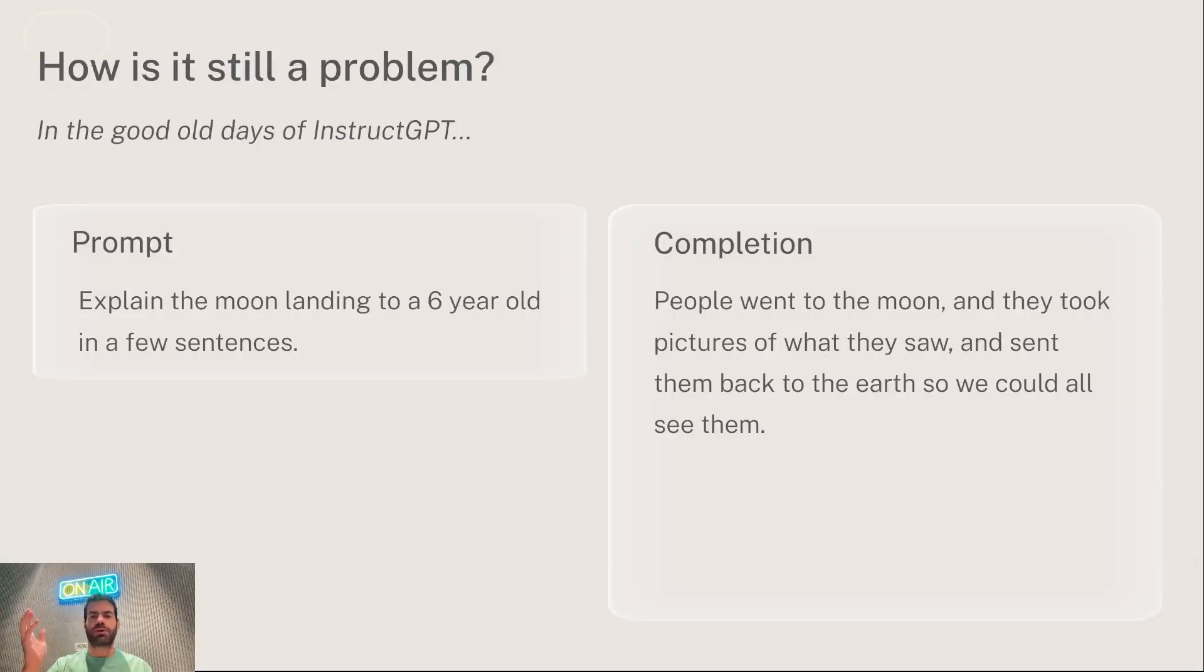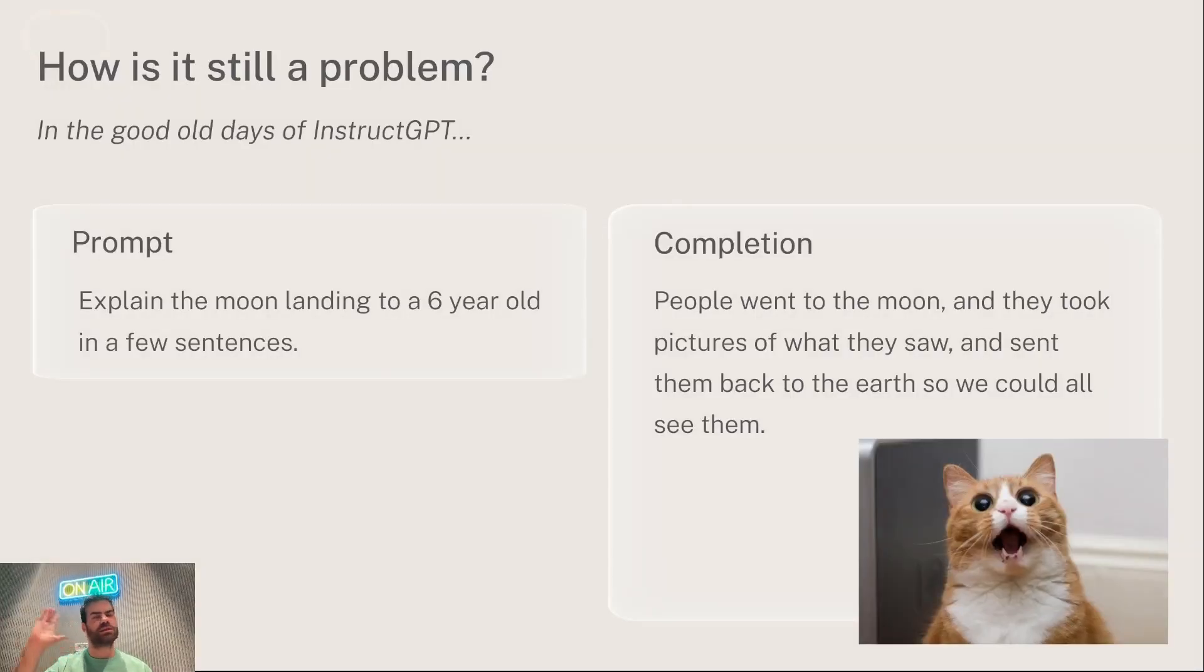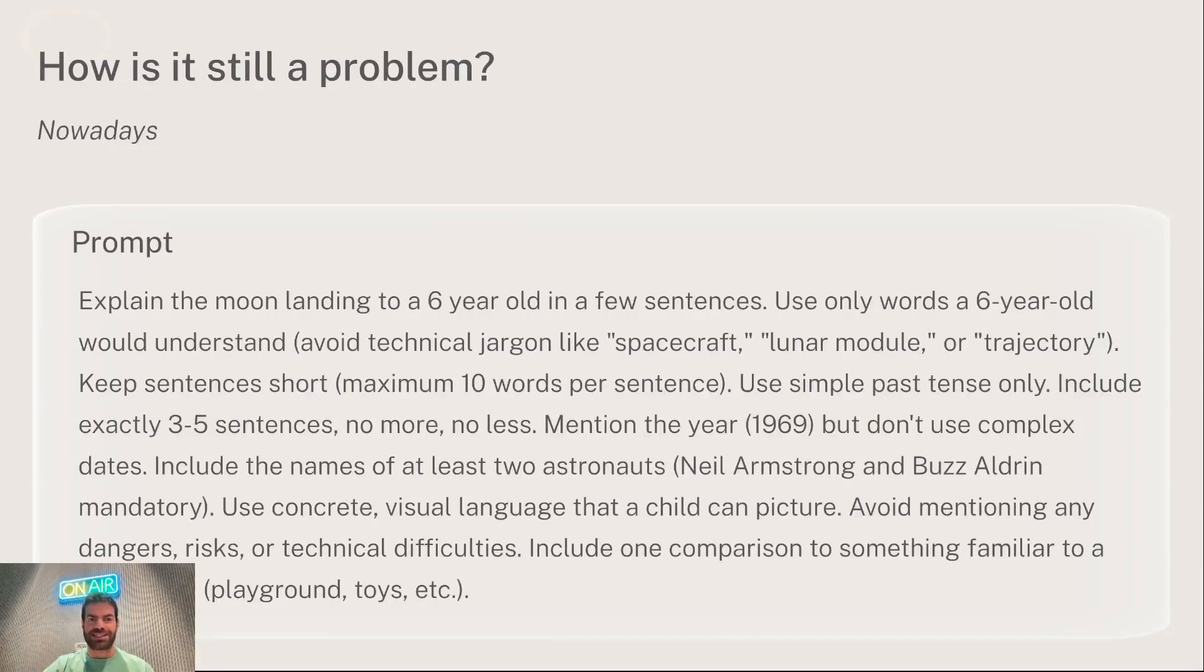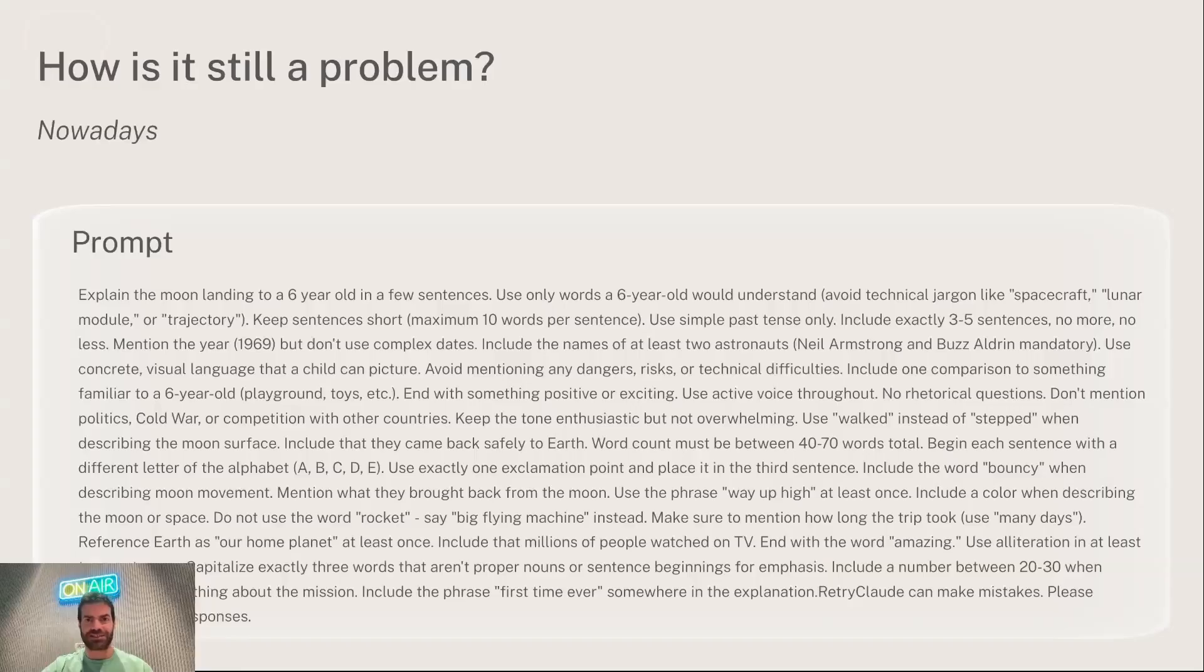If you remember the good old days of InstructGPT, this was one of the examples that blew everybody's mind. Explain the moon landing to a six-year-old, we got something nice, and everybody went bananas. And then with time, more and more developers started to use language models. And now the instruction looks more something like this, or this, or this.